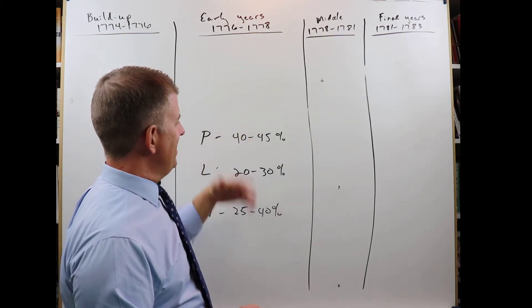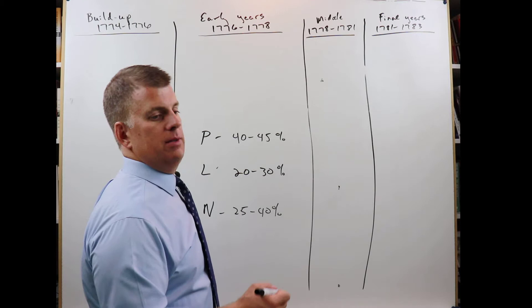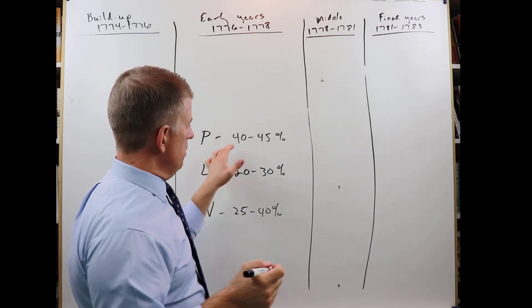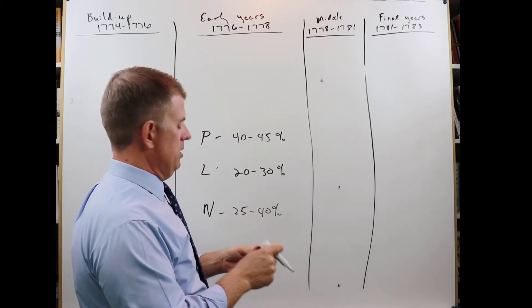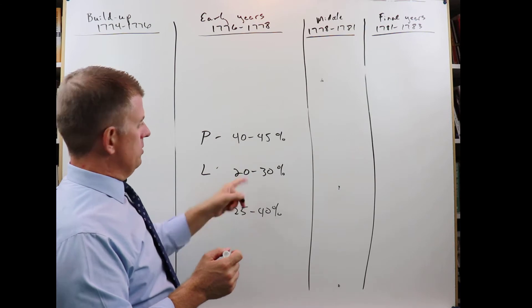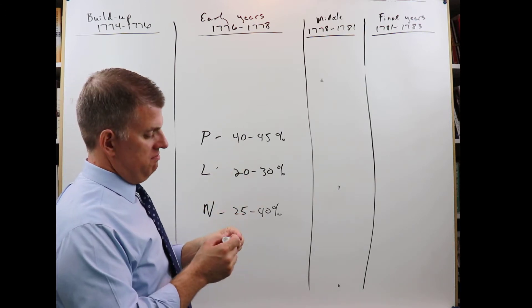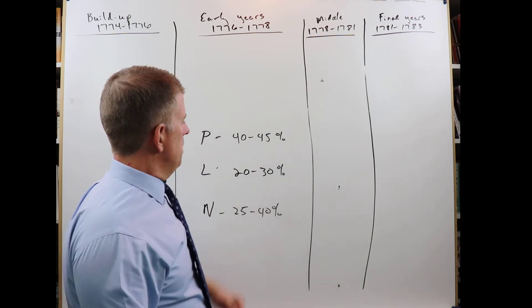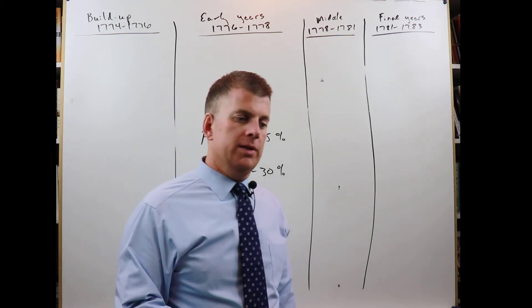So not a majority in any of these cases supported independence, but a plurality. So most of the people did support, well, perhaps, I guess it could be tied here. We've got 40, 40, and 20. Could be the same number. Or it could be most. But maybe not most by a lot. We're not exactly sure.